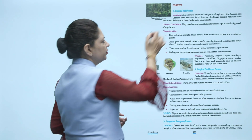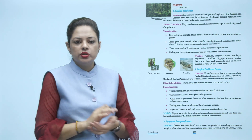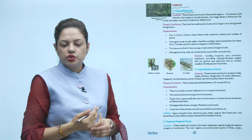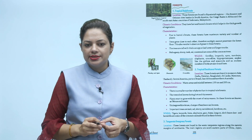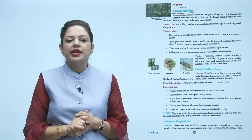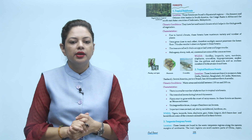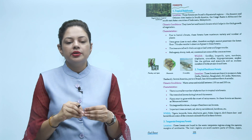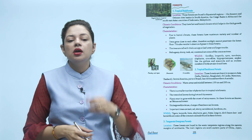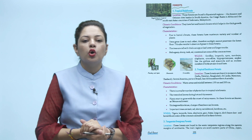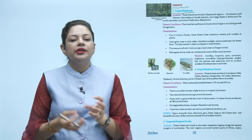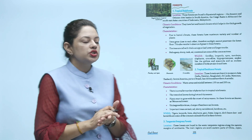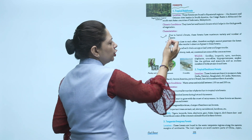Now let's talk about forests in detail. The first type is tropical rainforest, found in the equatorial region — such as the Amazon and Orinoco river basins in South America, the Congo basin in Africa, and Southeast Asian countries like Indonesia and Malaysia. The climate is hot and humid, causing daily rainfall and thick growth of vegetation. Due to the humid climate, maximum variety and number of plants grow here.